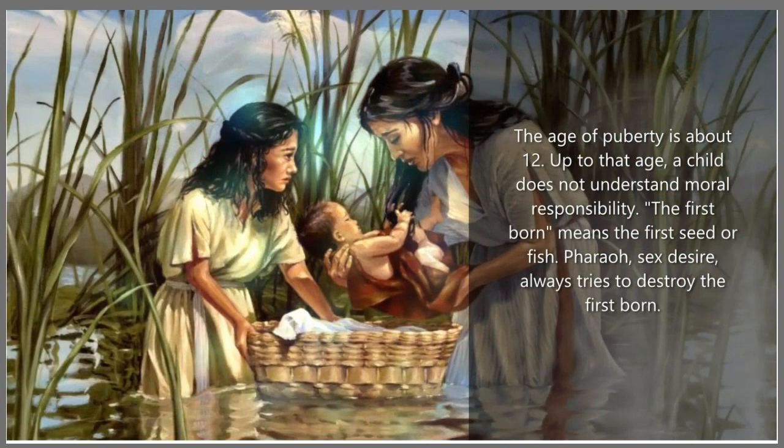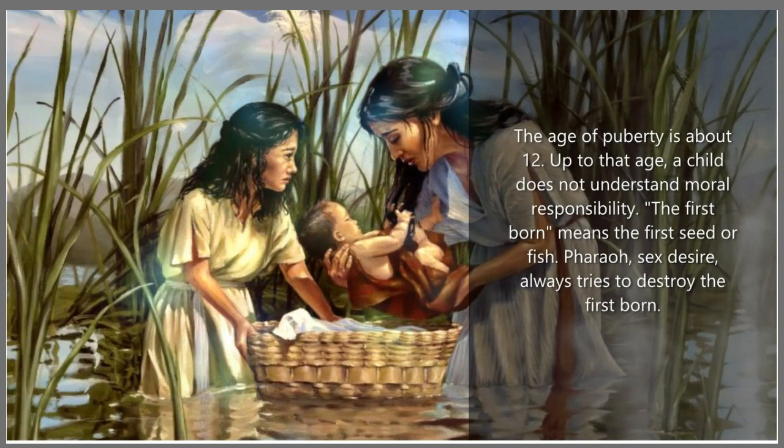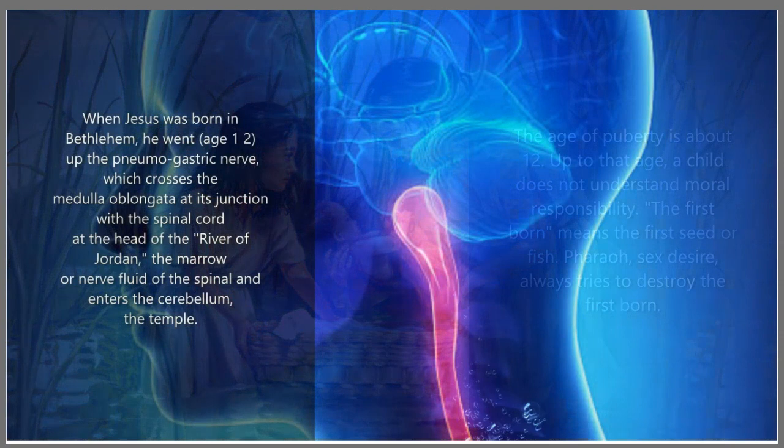The age of puberty is about twelve years old. Up to that age, a child does not understand moral responsibility. "The firstborn" means the first seed, or fish. Pharaoh, or sex desire, always tries to destroy the firstborn.